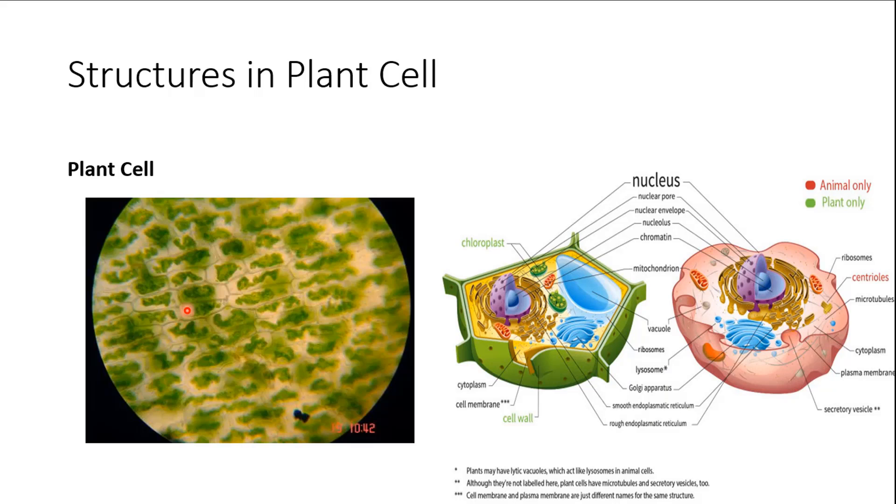Animal cells have a vacuole also. Animal cells have them, but theirs are small. So maybe the second difference is that plant cells have a large central vacuole, animal cells only have a small central vacuole.